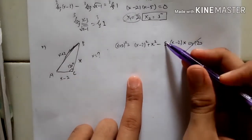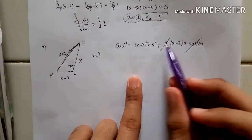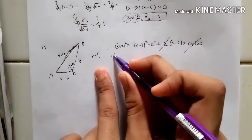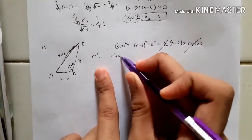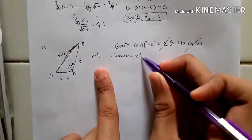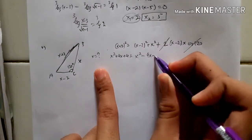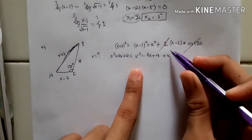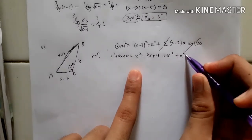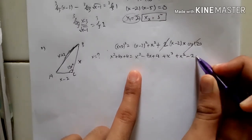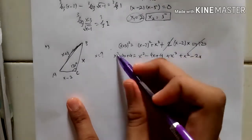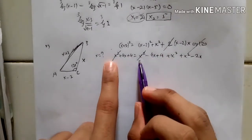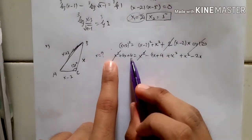We can cancel this, and this will become positive because minus times minus. So we open this: x squared plus 4x plus 4 equals x squared minus 4x plus 4, plus x squared minus 2x. We can cancel the x squared on both sides, and then cancel the 4.